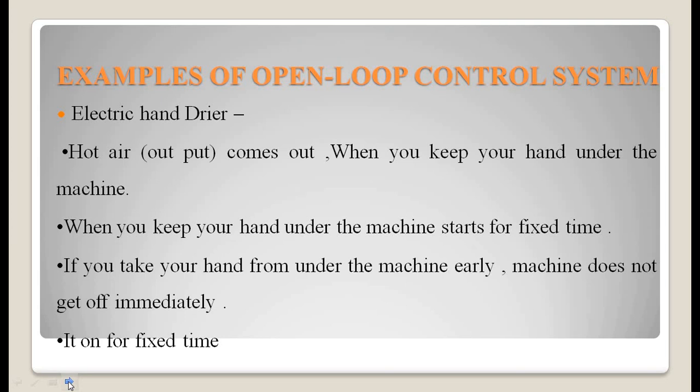Another example: an electric hand dryer. Hot air comes out when you keep your hand under the machine. It starts for a fixed time, and if you take your hand out early, the machine does not stop immediately — it runs for the fixed time period. So the output is not controlled according to a change in input. That is an open loop control system.